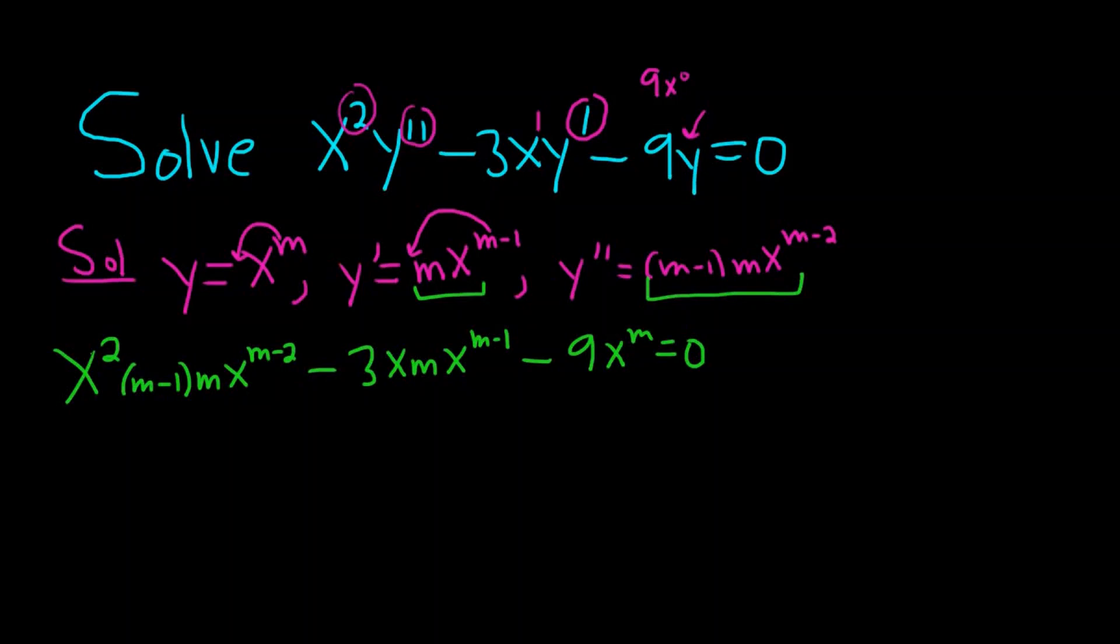So every time you're solving Cauchy-Euler differential equations and you get to this step, what you do next is you group the x's together. So here we have x squared. Here we have x to the m minus 2. When you multiply these, you add the exponents. So 2 plus m minus 2 is just m. So we have m minus 1 times m times x to the m.